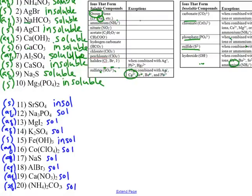In examples 11 through 20, there were only two compounds that turned out to be insoluble: numbers 11 and 15 — strontium sulfate and iron-3 hydroxide. Those are the only two you would write as solids. Everything else is soluble and you would write an aqueous symbol after that chemical compound in a chemical equation.